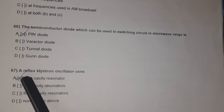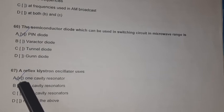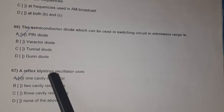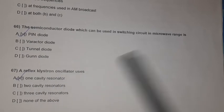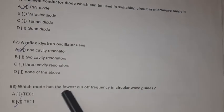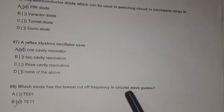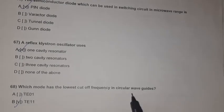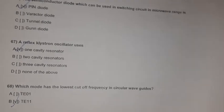Question 65: A reflex klystron oscillator uses one cavity resonator. Question 66: The mode with the lowest frequency (dominant mode) in a circular waveguide is TE11.